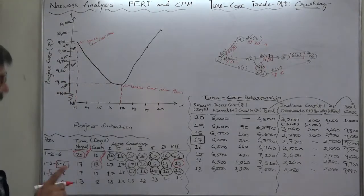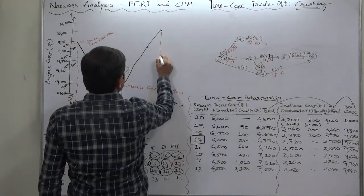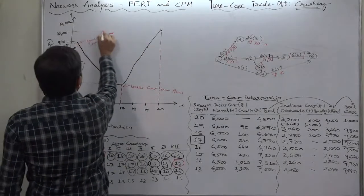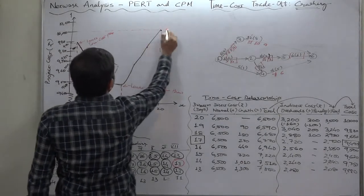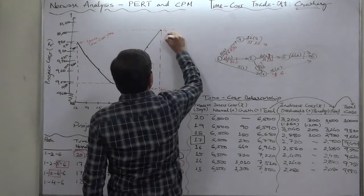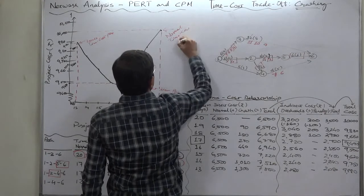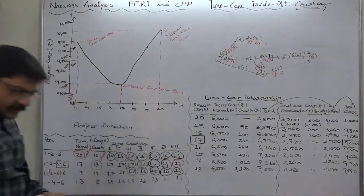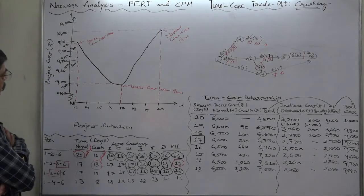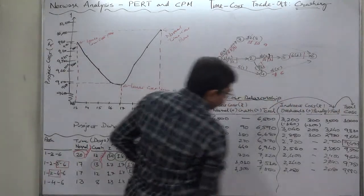And one more thing we have is normal. If we don't go for crashing this will be the situation. Normal time cost point. The pen is not working properly, but you can see all these points in this chart also.